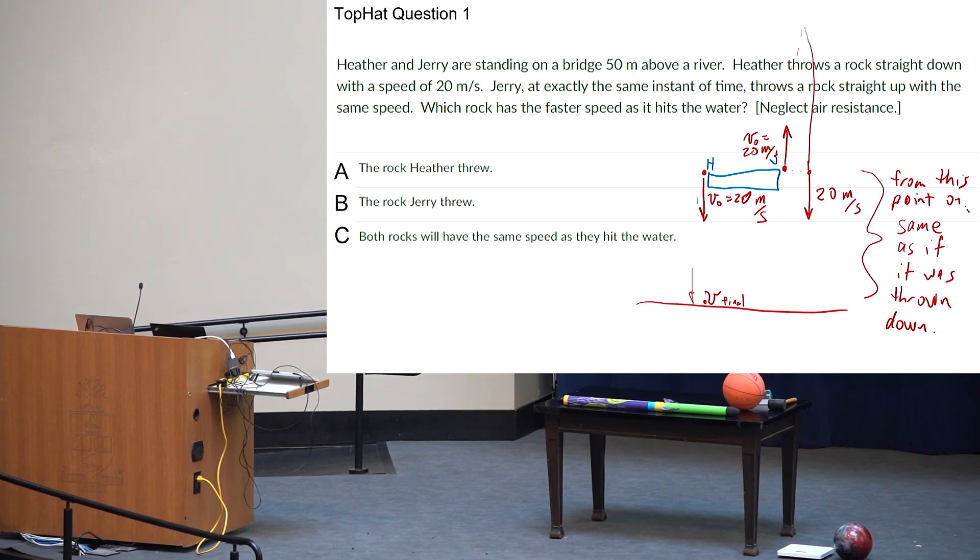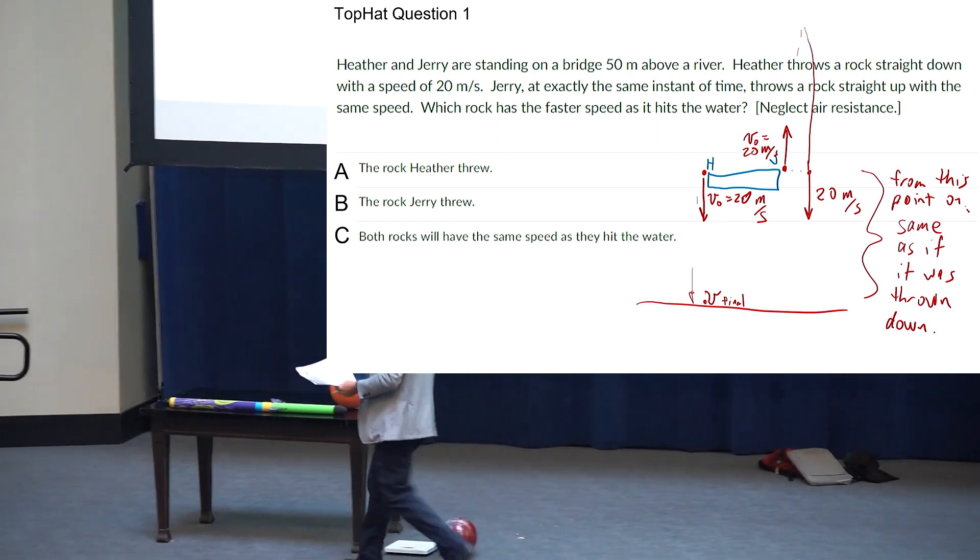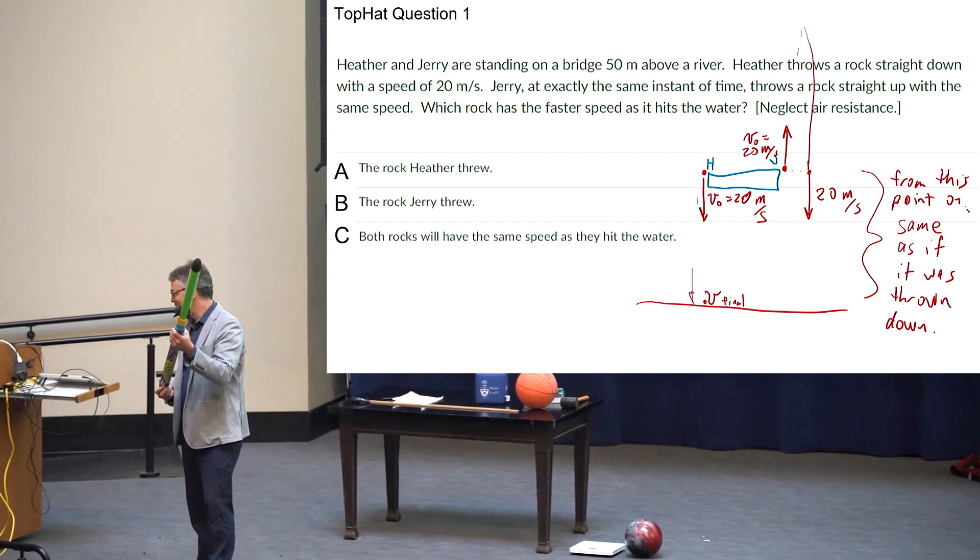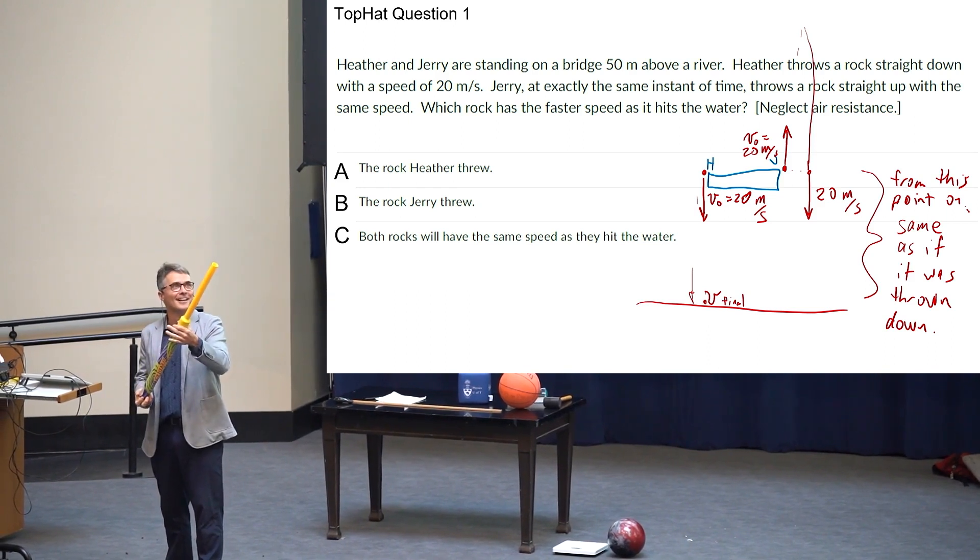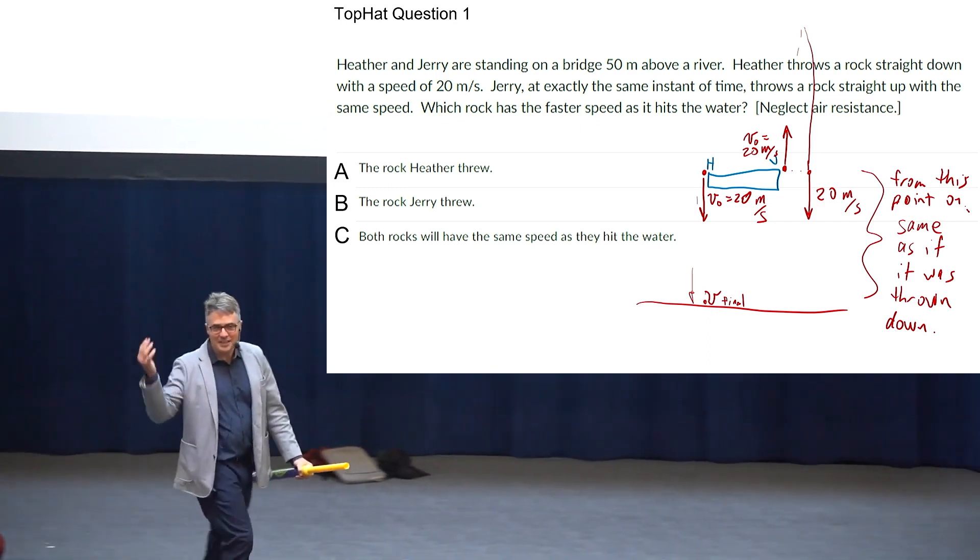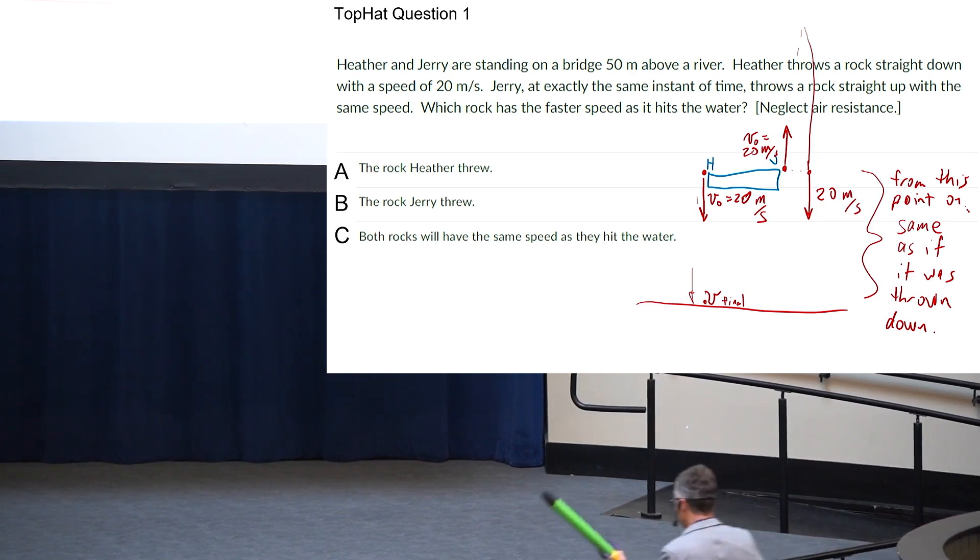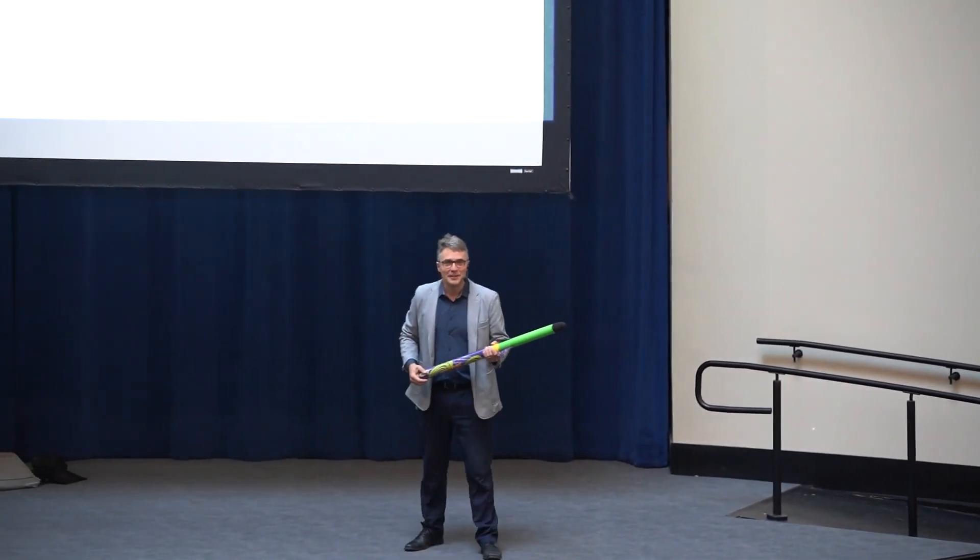Does that make sense to you guys? Anybody want to object or questions? So if it stops at its apex and its velocity is zero, then when it comes down, isn't the only force acting on it gravity? Where does it get the 20 meters per second velocity from? From gravity.